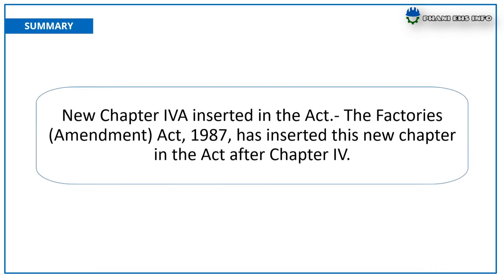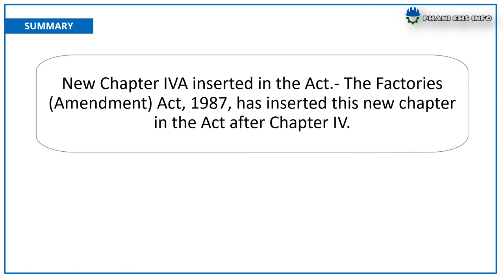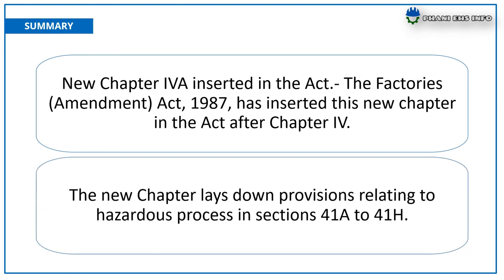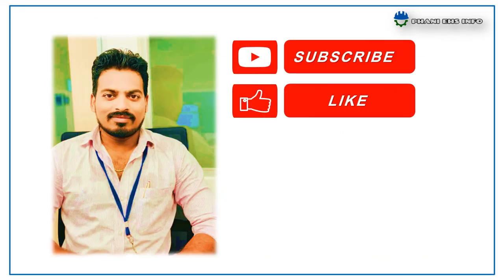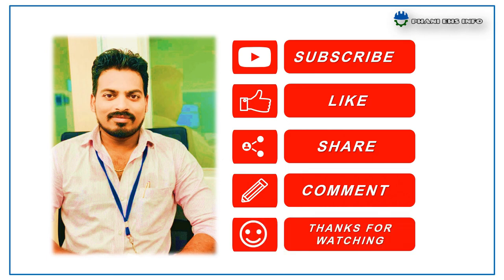This is about Chapter 4A of the Factories Act. To summarize: a new Chapter 4A was inserted in the Factories Act by the 1987 amendment, after Chapter 4. This new chapter lays down provisions relating to the hazardous process in Sections 41A to 41H. Thanks for watching and have a safe day.